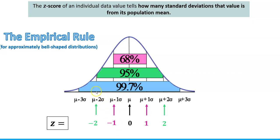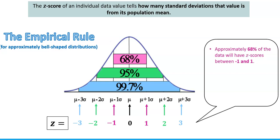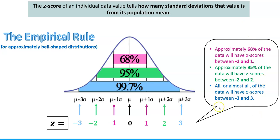Continuing: two standard deviations below the mean gives a z-score of negative 2, and two standard deviations above gives a z-score of 2. All data values with z-scores between negative 2 and 2 make up 95% of all observations. Similarly, three standard deviations below and above give z-scores of negative 3 and 3 respectively, and that completes the explanation of the empirical rule in terms of z-scores.